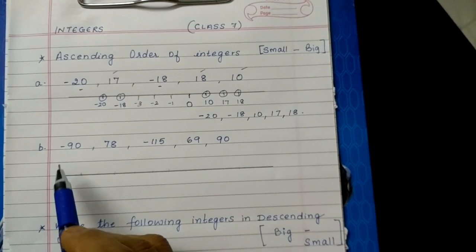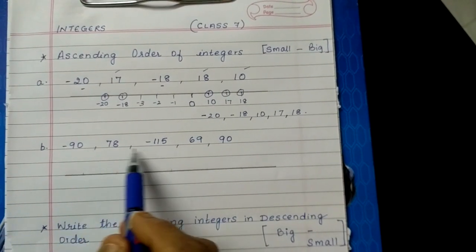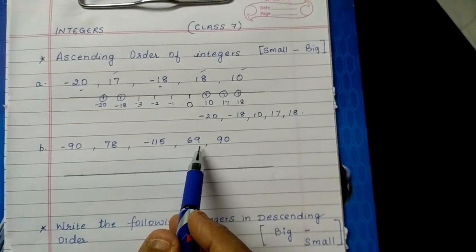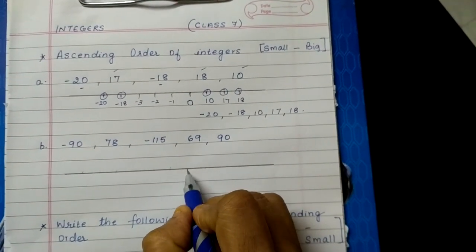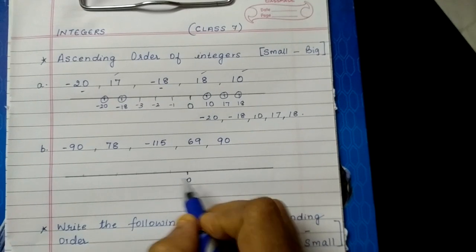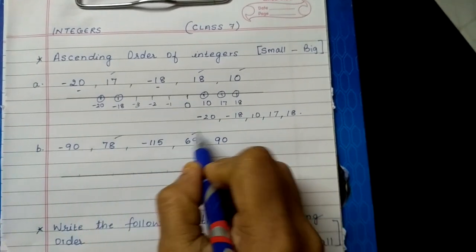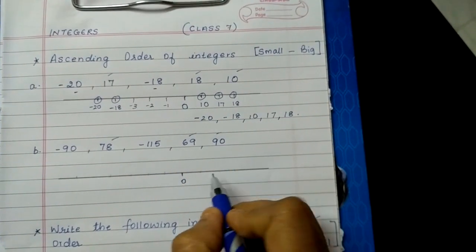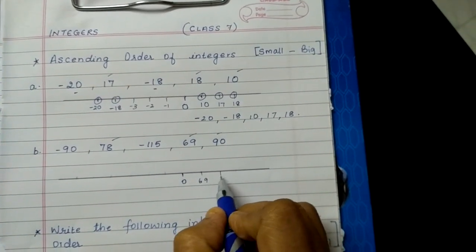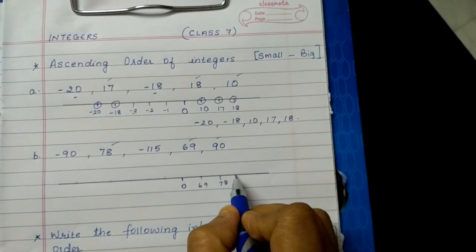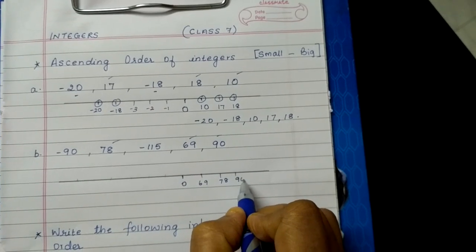The next question: first let us place the positive numbers. So 78, 69, and 90 — 69 will come first, then 78 followed by 90.